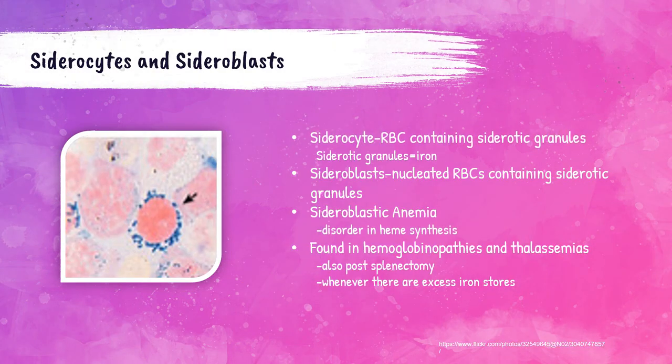Siderocytes are mature red blood cells that contain iron granules. Sideroblasts are nucleated (immature) red blood cells within the bone marrow that specifically contain iron granules. Ring sideroblasts have iron that encircles the nucleus of the red blood cell and are abnormal, present in some myelodysplastic syndromes. An increase of siderocytes is associated with patients that have had their spleens removed and those with hemoglobinopathies or thalassemias.